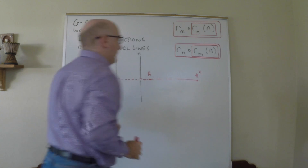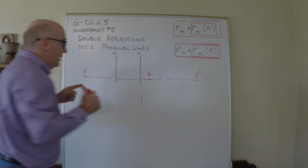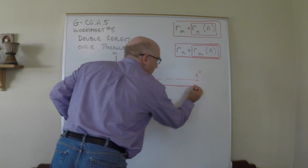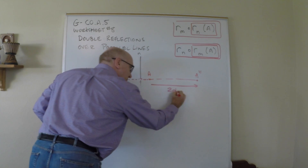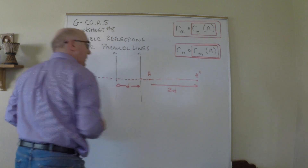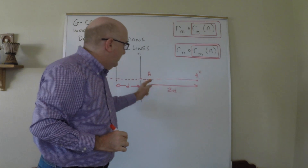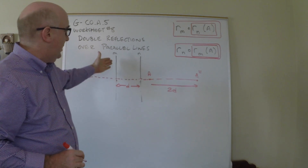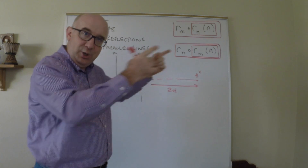Now we reflect over n second — we're this far away, so we'll be that same distance away, probably here. See what happened: a to a prime ended up going to the right. It's exactly again two times the distance between the parallel lines, but it moves in a rightward direction because it went over m first, then n.